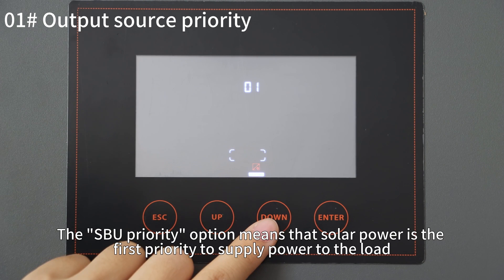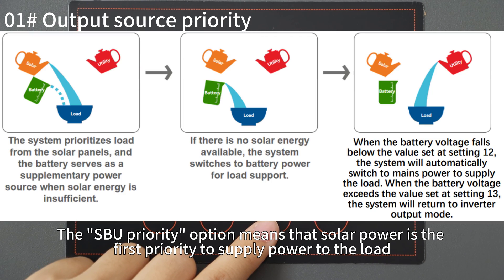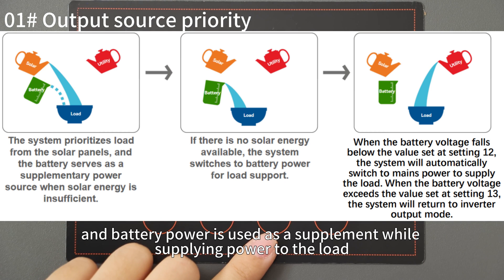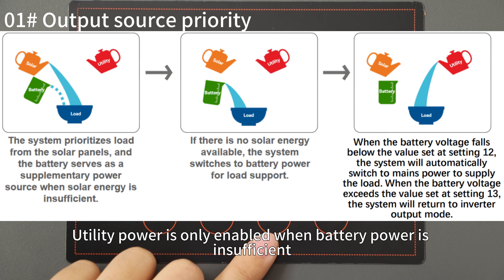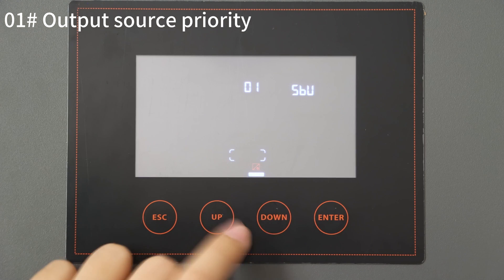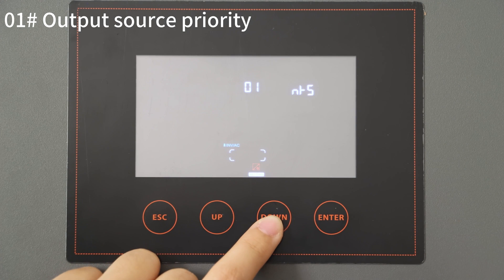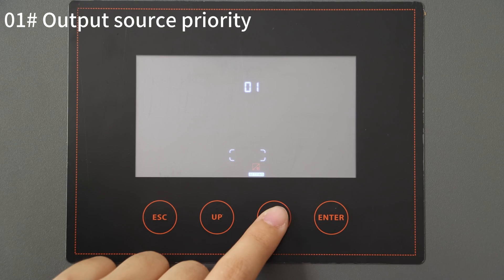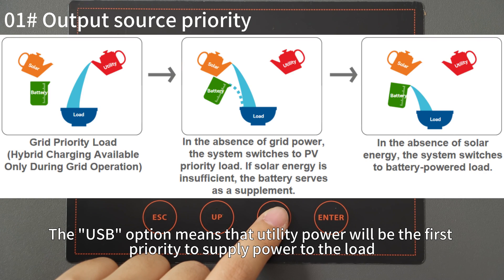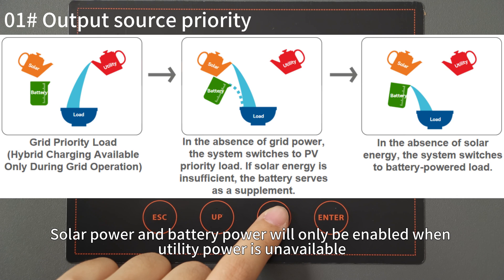The SVU priority option means that solar power is the first priority to supply power to the load, and battery power is used as a supplement. Utility power is only enabled when battery power is insufficient. The USB priority option means that utility power will be first priority to supply power to the load, and solar power and battery power will only be enabled when utility power is available.